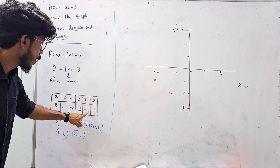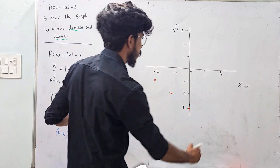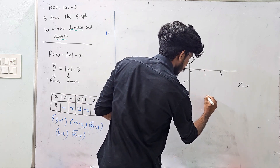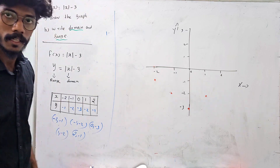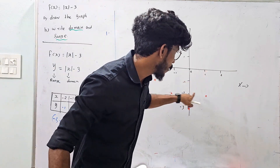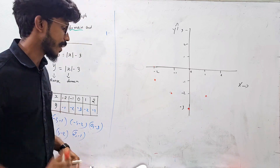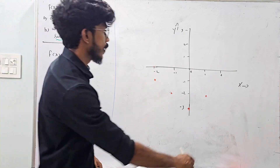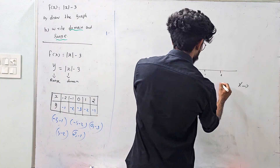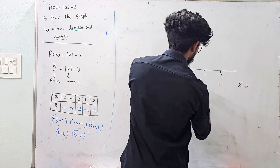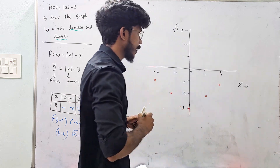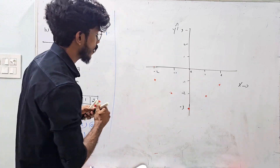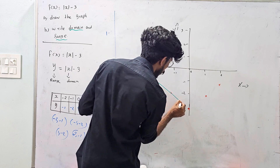Next point: x = 1, y = -2. Mark that point. Last value: x = 2, y = -1. Mark that point. So these are all the points — all the points are connected.